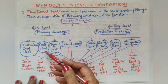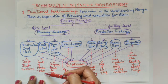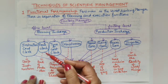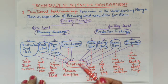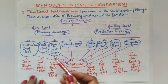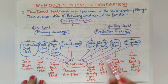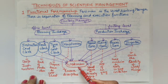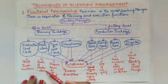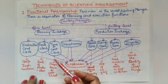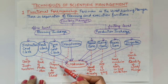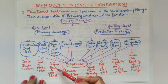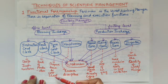The second is the Route Clerk, who determines the route of production — the path that production will follow. The third is the Time and Cost Clerk, who records the time given to workers day-wise and maintains the labor cost sheet, recording everything related to time and costs.